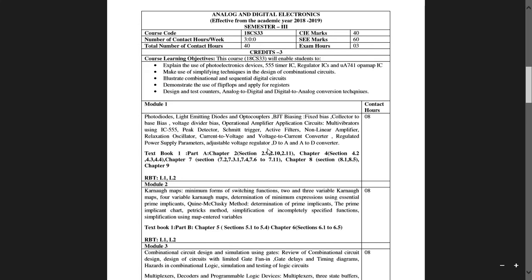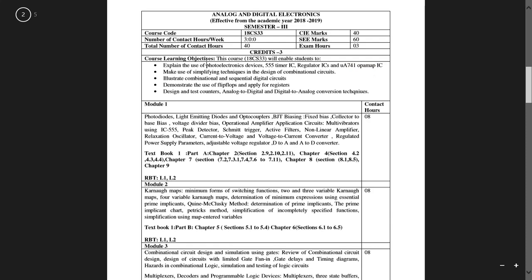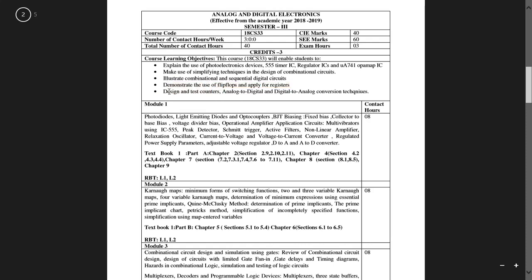The course learning objectives are as follows: explain the use of photoelectronic devices, 555 timer IC, regulator ICs, and 741 operational amplifier (op-amp); make use of simplifying techniques in the digital design of combinational circuits; illustrate combinational and sequential digital circuits; demonstrate the use of flip-flops and apply them for register design; and test counters, analog-to-digital, and digital-to-analog conversion techniques.